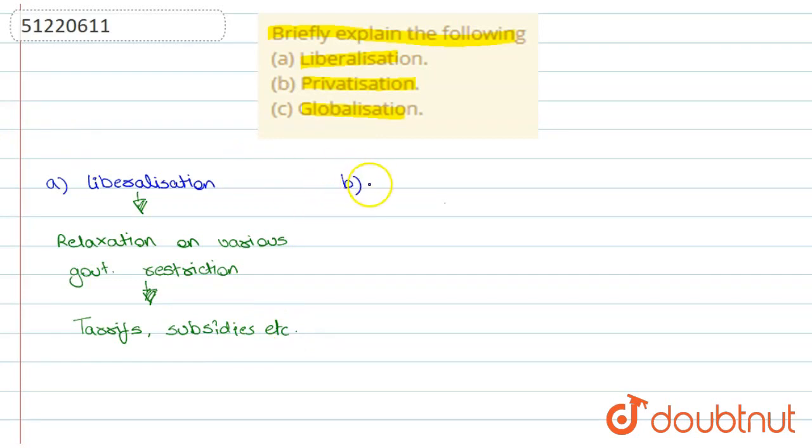Then comes the second one, which is privatization. In privatization, the government sector was converted to private sector. There was given a permission of converting government sector into private sector.